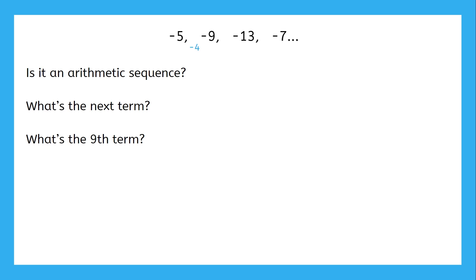the second and third terms have a difference of negative 4, and the third and fourth terms have a difference of positive 6. This sequence does not involve adding or subtracting the same number over and over again, so it's not an arithmetic sequence.